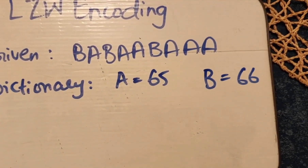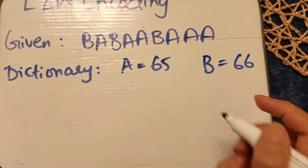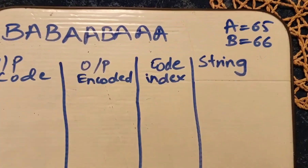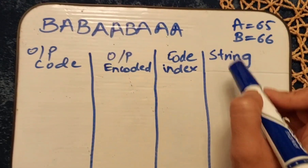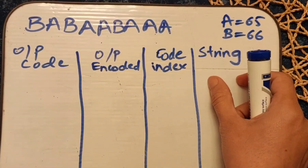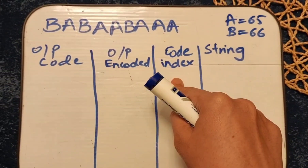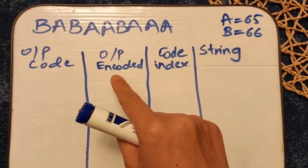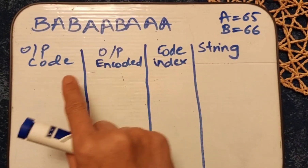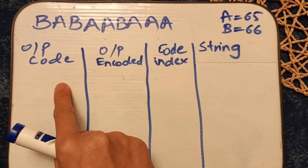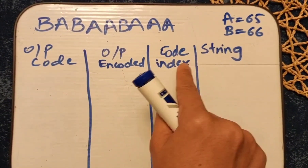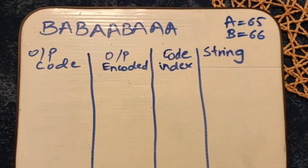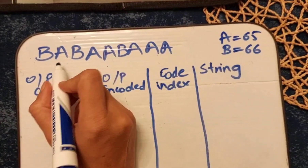We are going to make a table with four columns: one for the substrings, one for the code or index value of those substrings, one for the encoded output, and one for the output's code. So the four columns are: string, code, output, and output's code.